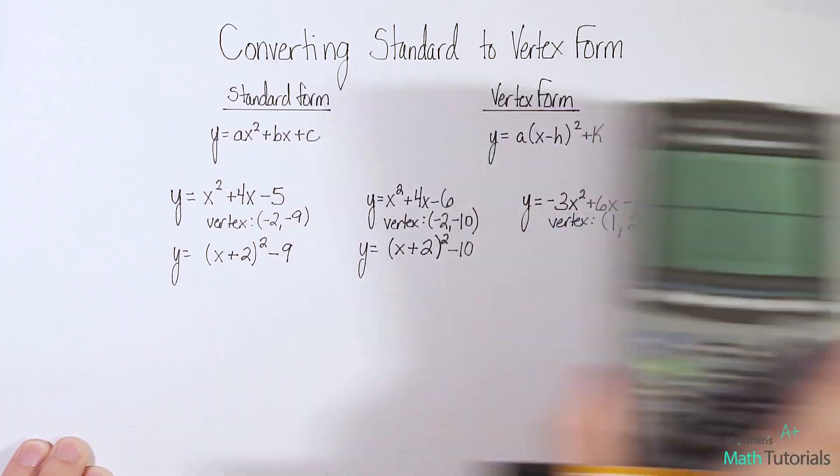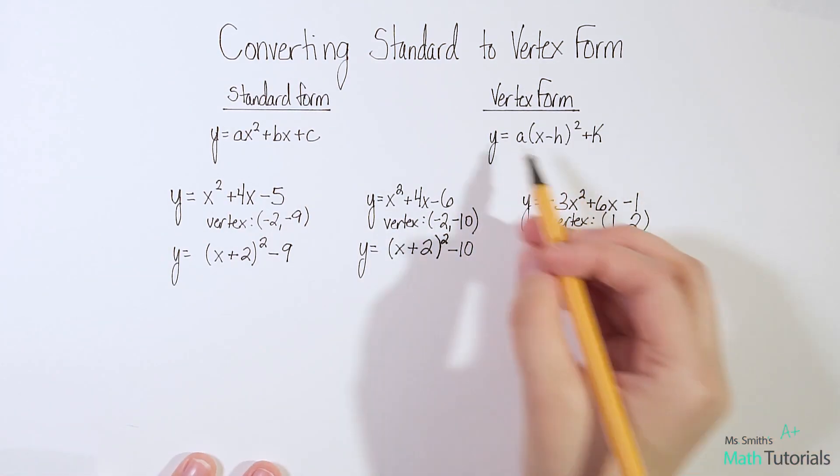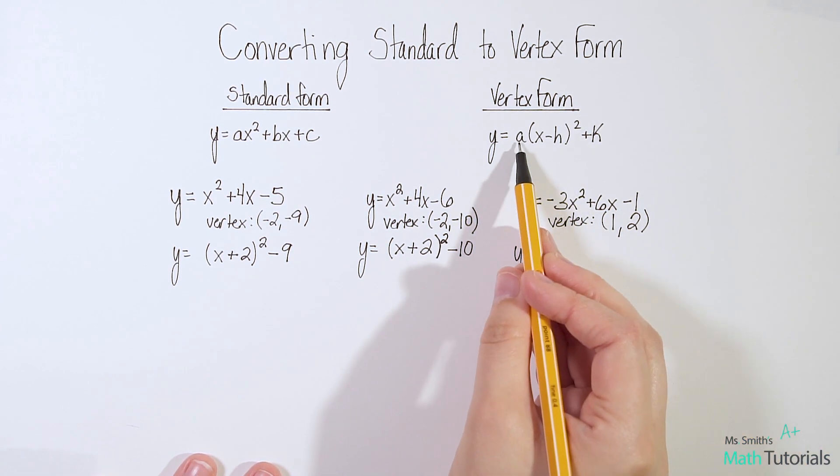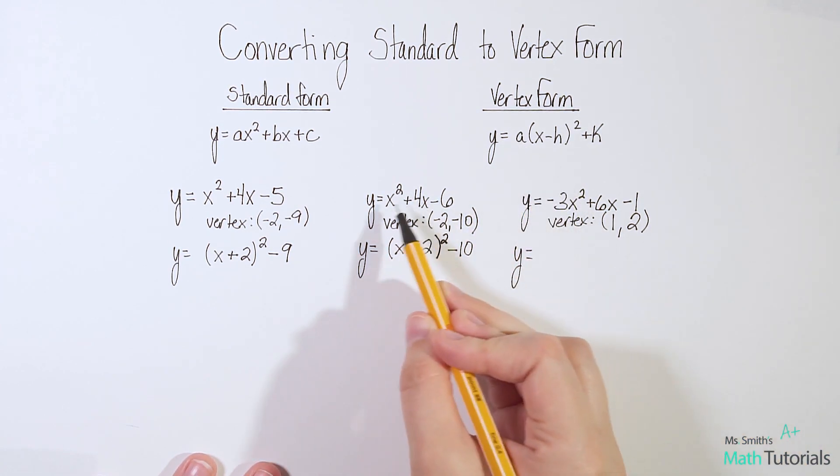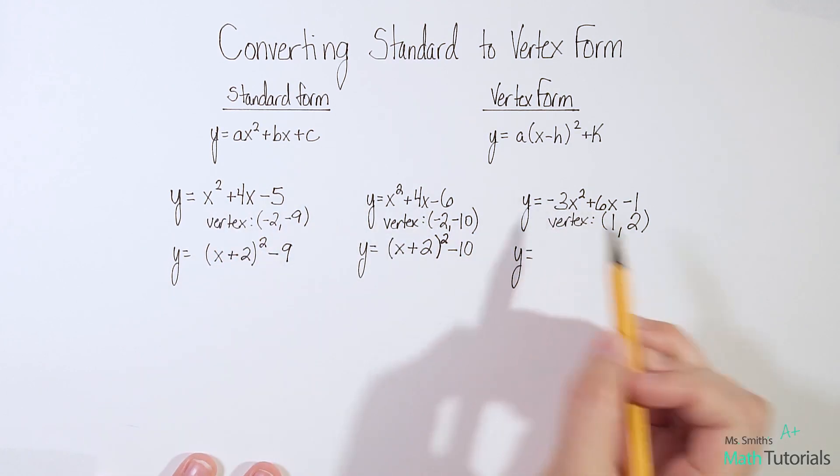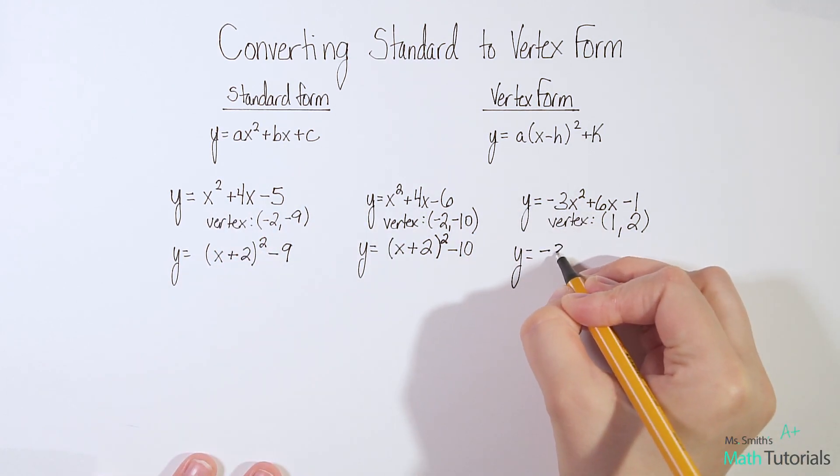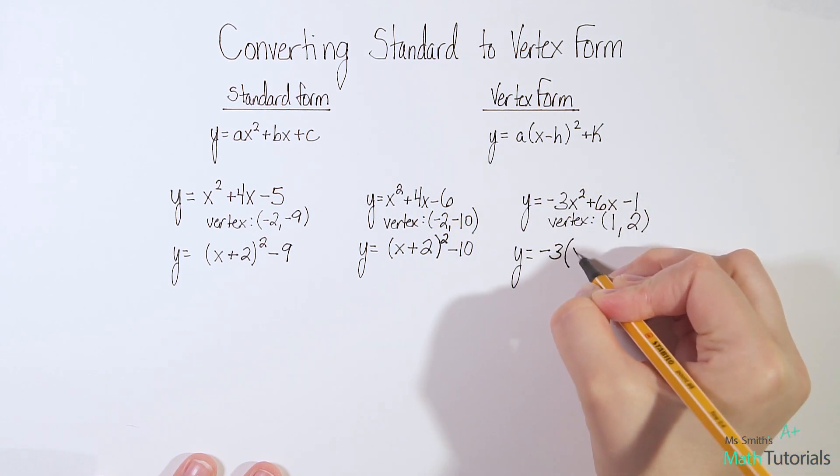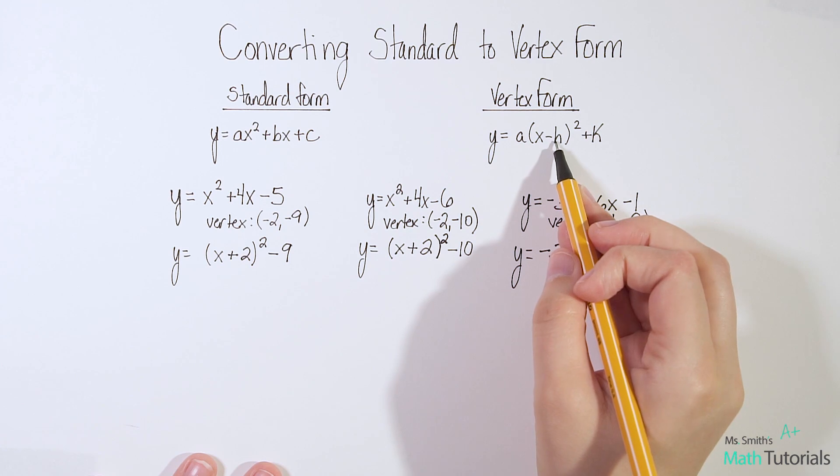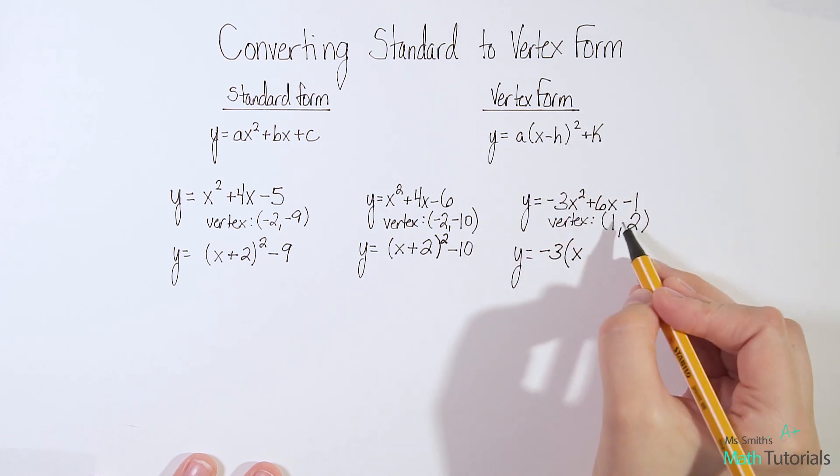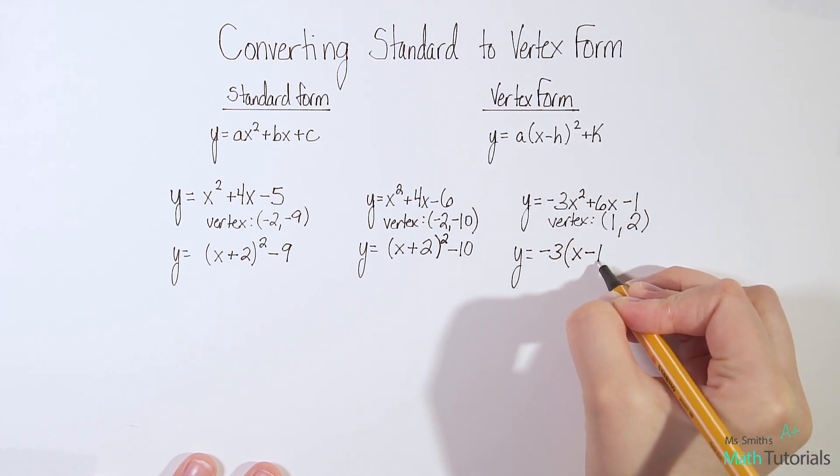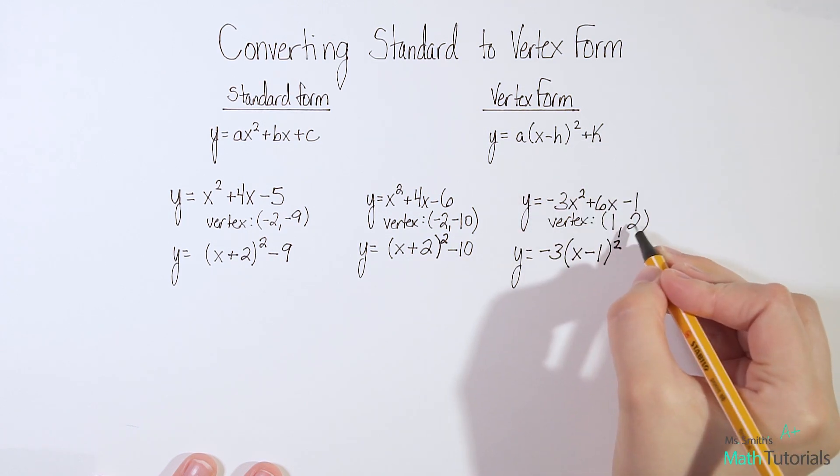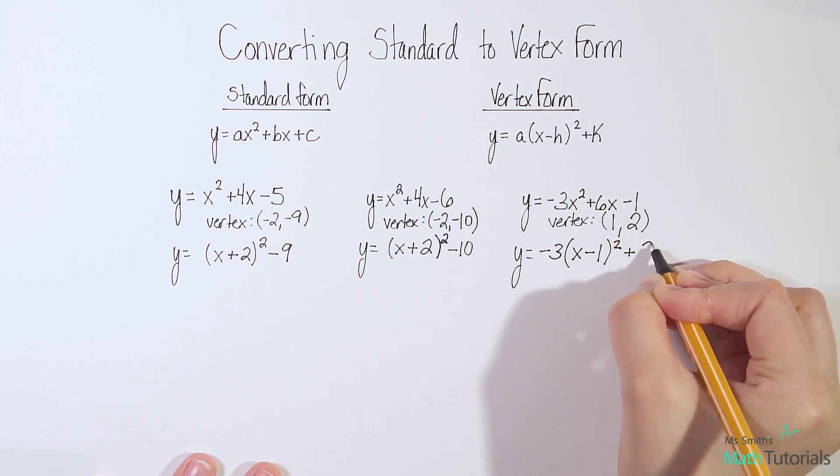Now that I know my vertex, the rest is easy. I just fill it into this form. y equals - remember a is whatever a is here. On the other two, it's just been understood positive 1, but here it is a negative 3. So we just write negative 3 out front, parenthesis, x. My h is my opposite x value. So this is positive 1, so I need a negative 1, minus 1 squared, plus k. So in this case, plus 2.